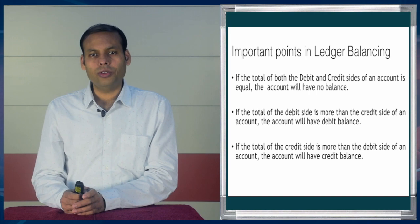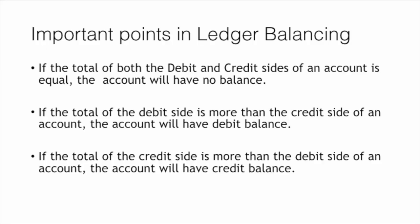Now there are certain important points in ledger balancing. If the total of both the debit and credit sides of an account is equal, the account will have no balance — it is a zero balance account, with nothing to deduct. Secondly, if the total of the debit side is more than the credit side, the account will have a debit balance. If the total of the credit side is more than the debit side, the account will have a credit balance — as in our example, where the opening balance b/d is on the credit side. Similarly, if the opening balance b/d is on the debit side, it is known as a debit balance account.